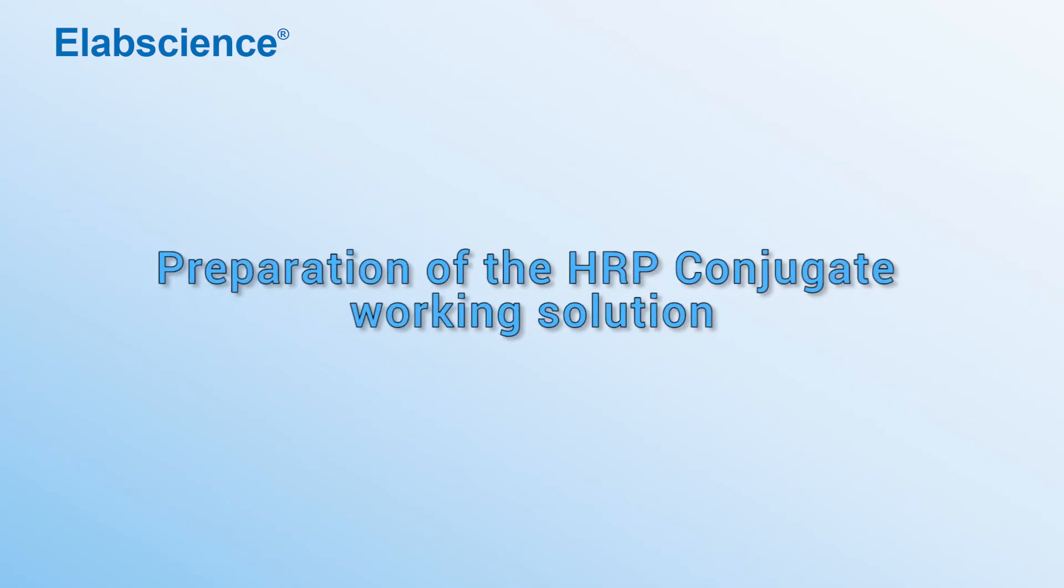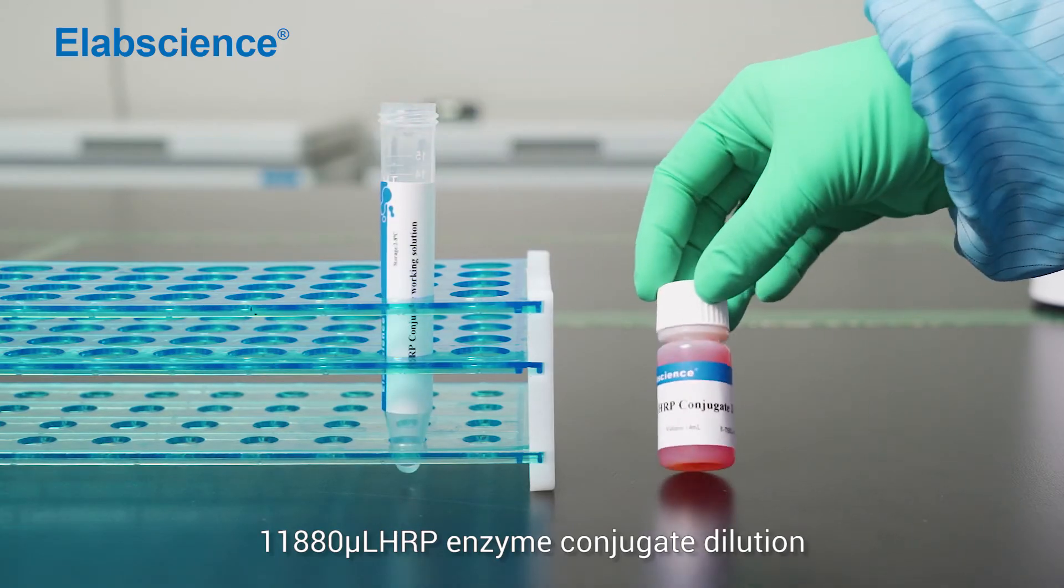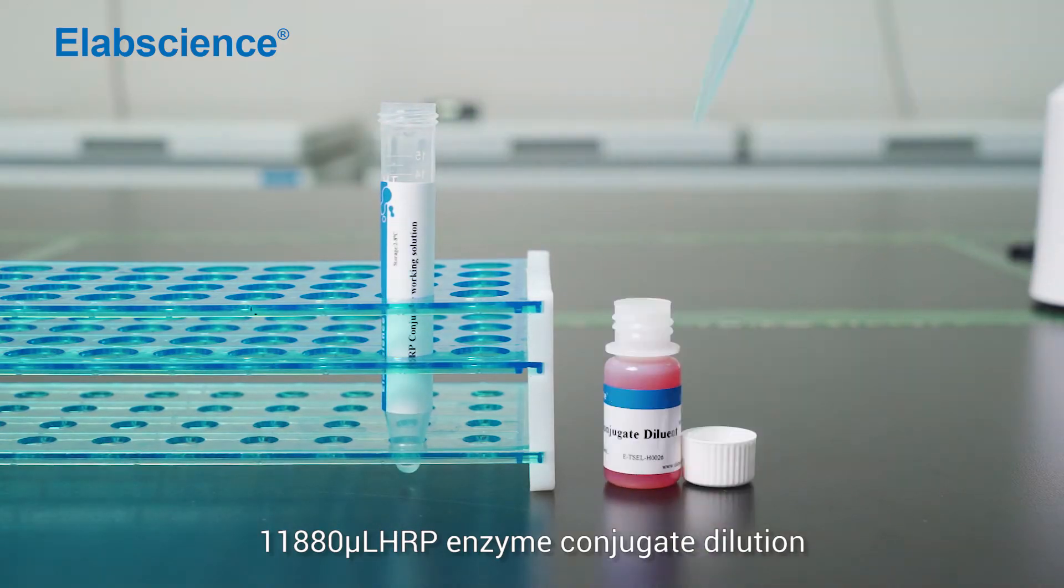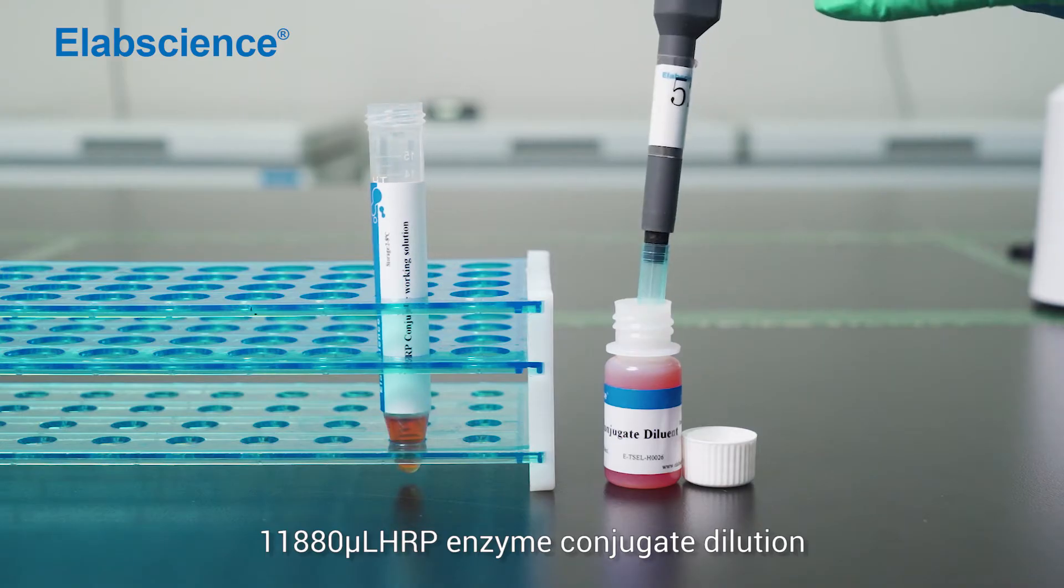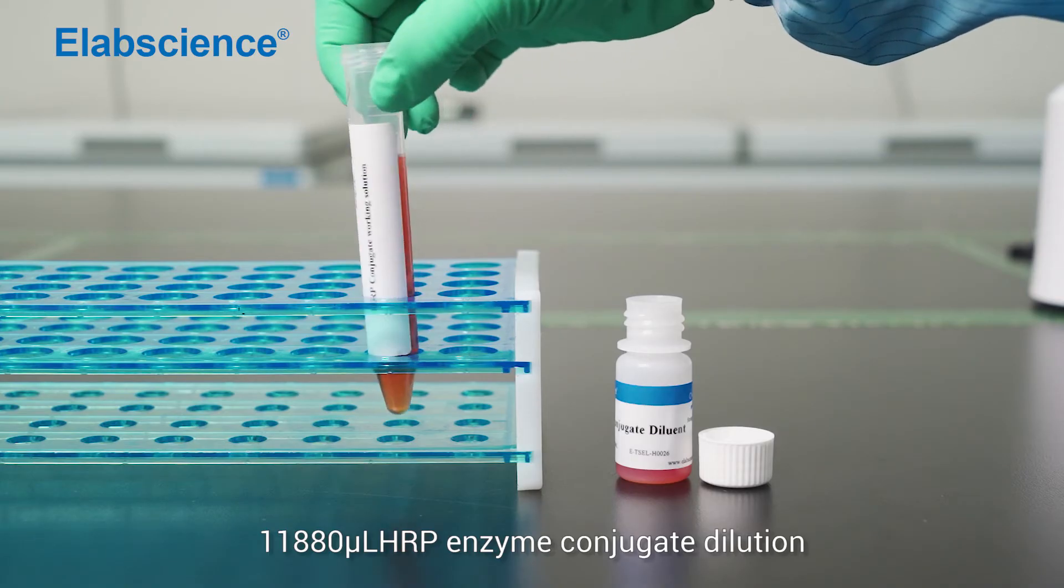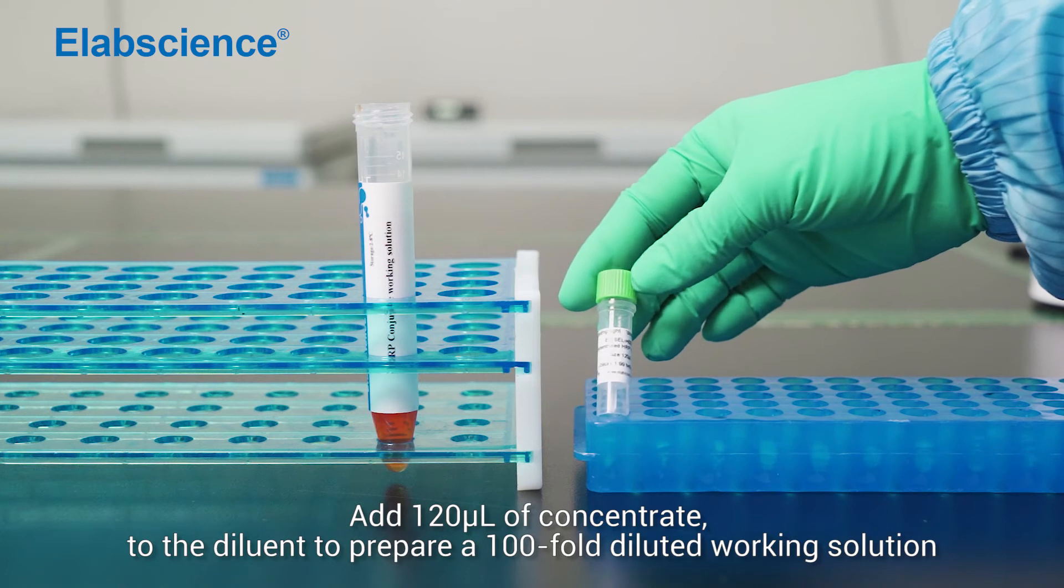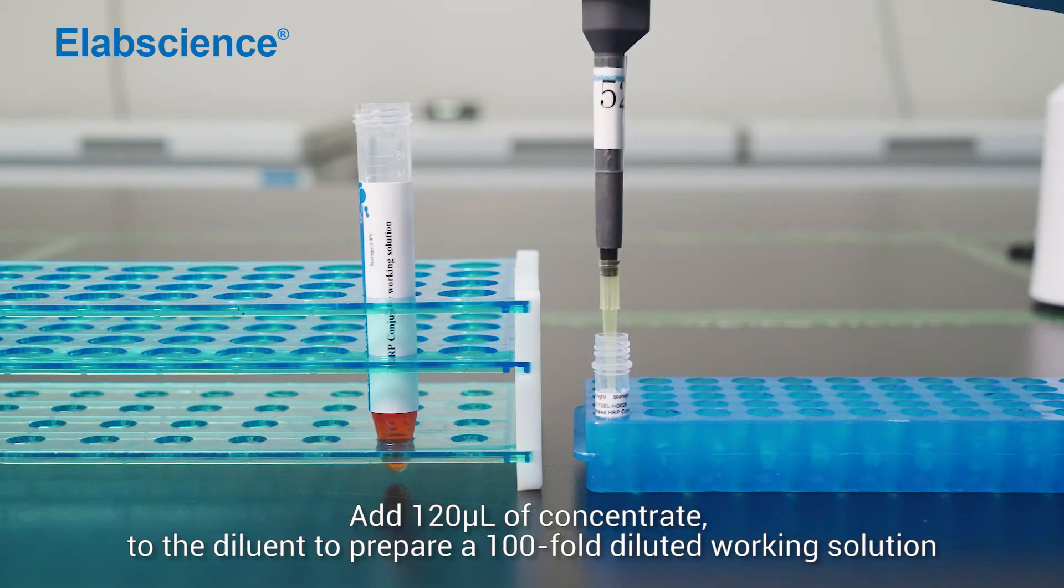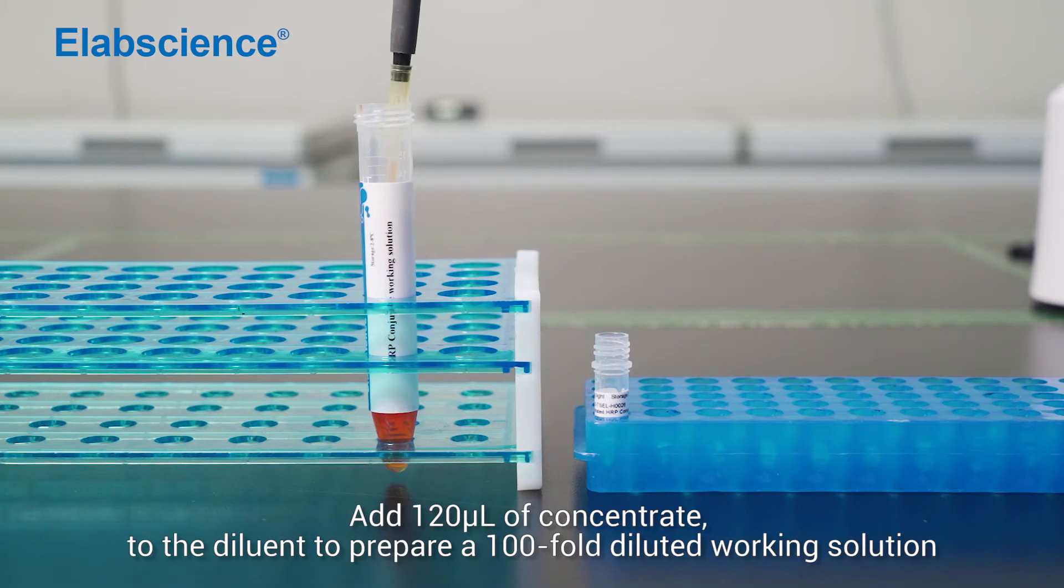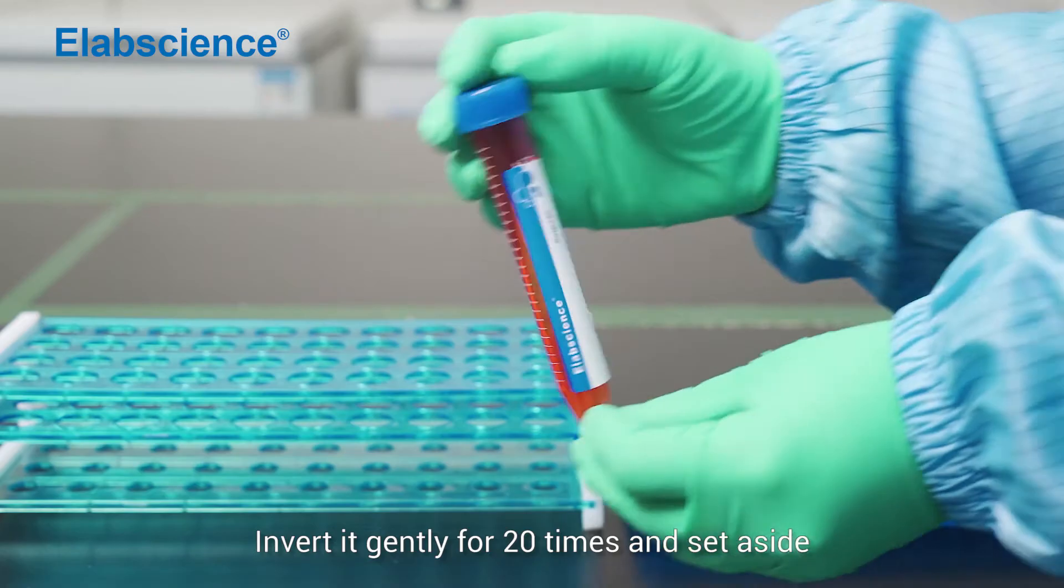Preparation of the HRP conjugate working solution. Take 11,880 µL of HRP enzyme conjugate diluent. Add 120 µL of concentrated to the diluent to prepare a 100-fold diluted working solution. Invert it gently for 20 times and set aside.